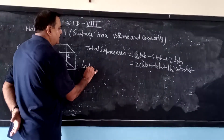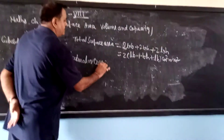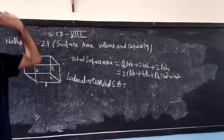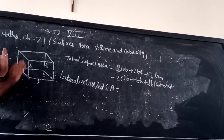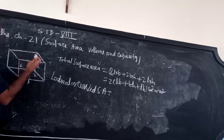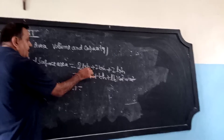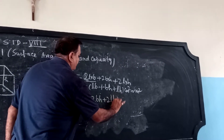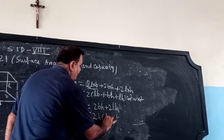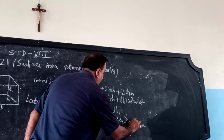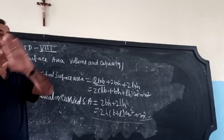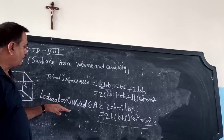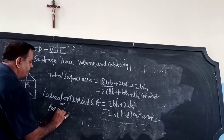When you have to find the lateral or curved surface area — leaving the bottom and top faces — so when we leave the bottom and top face, how many faces will be left? Four. Front one and side one. Leaving the bottom and top face, we minus that portion. What is left is twice bh plus twice lh, so take 2 common and h common: 2h(b + l) centimeter squared or meter squared. This is also used as area of 4 walls, meaning not including the bottom and top.